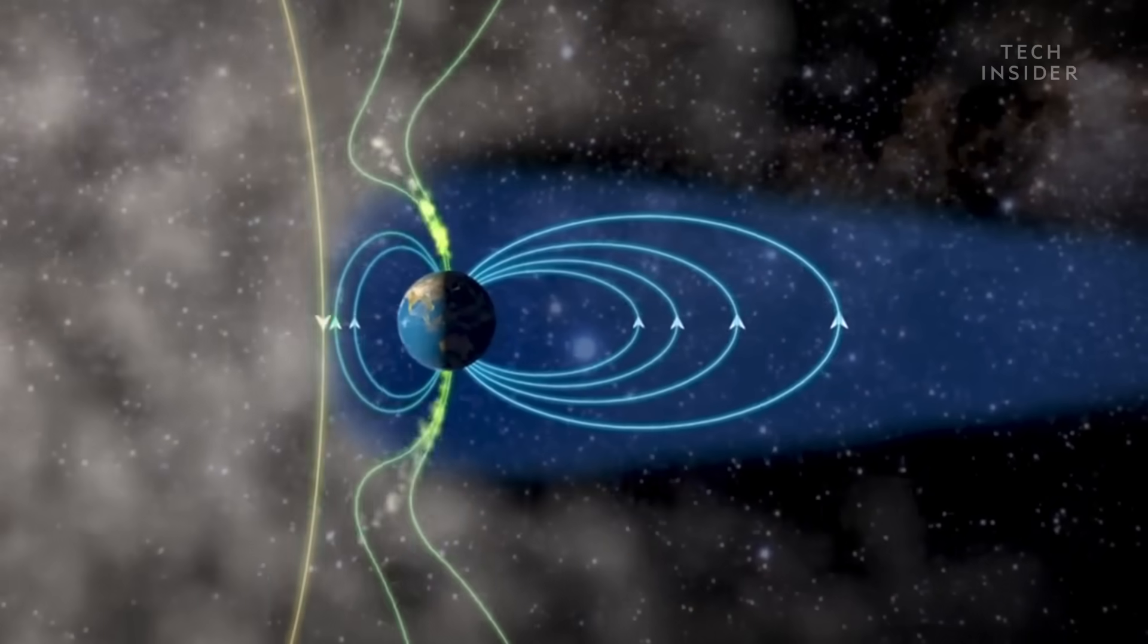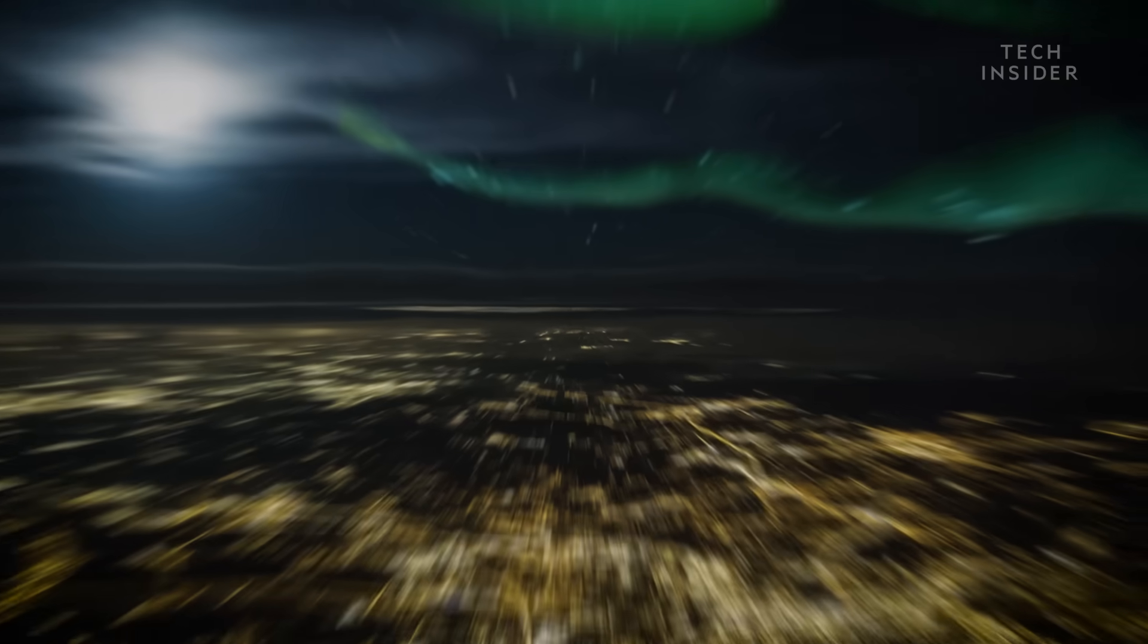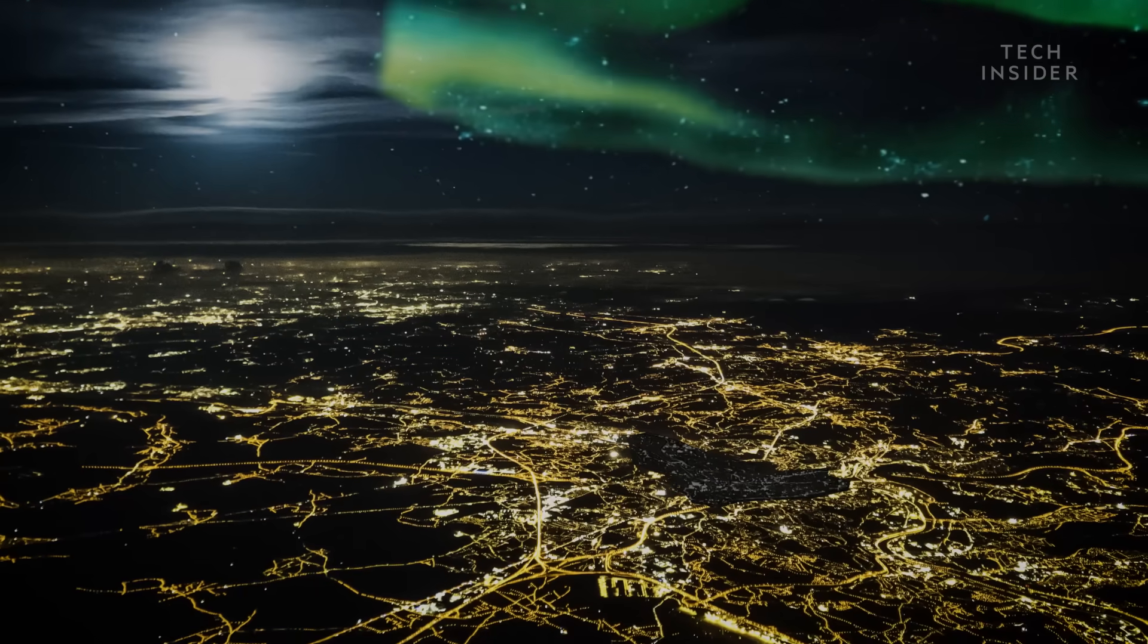Earth's magnetic field is what shields us from harmful space radiation, which can damage cells, cause cancer, and fry electronic circuits and electrical grids.